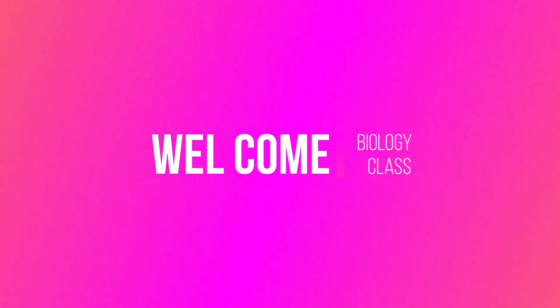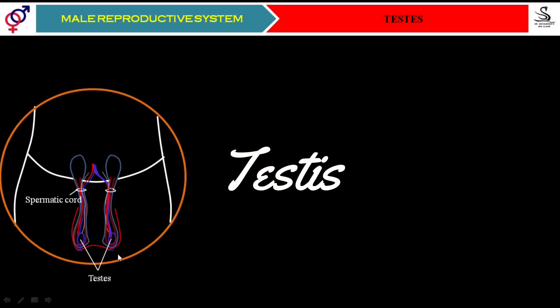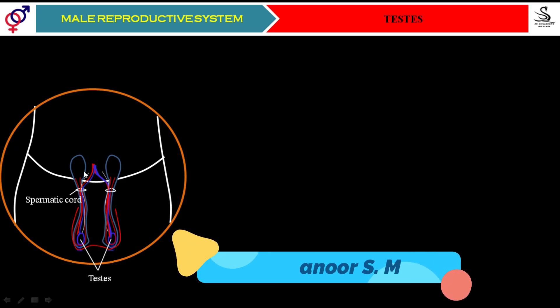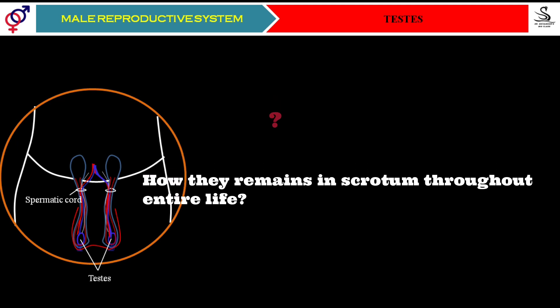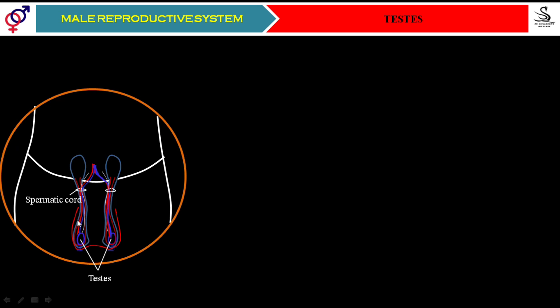A very warm welcome to your class. In this class we are going to understand regarding the testes. In my previous video I have explained where the testes will get originated, how they descend into the scrotal sac, how they are connected with the abdominal cavity, and how they remain inside the scrotal sac throughout the entire life. You can watch that video using the link in the description box.